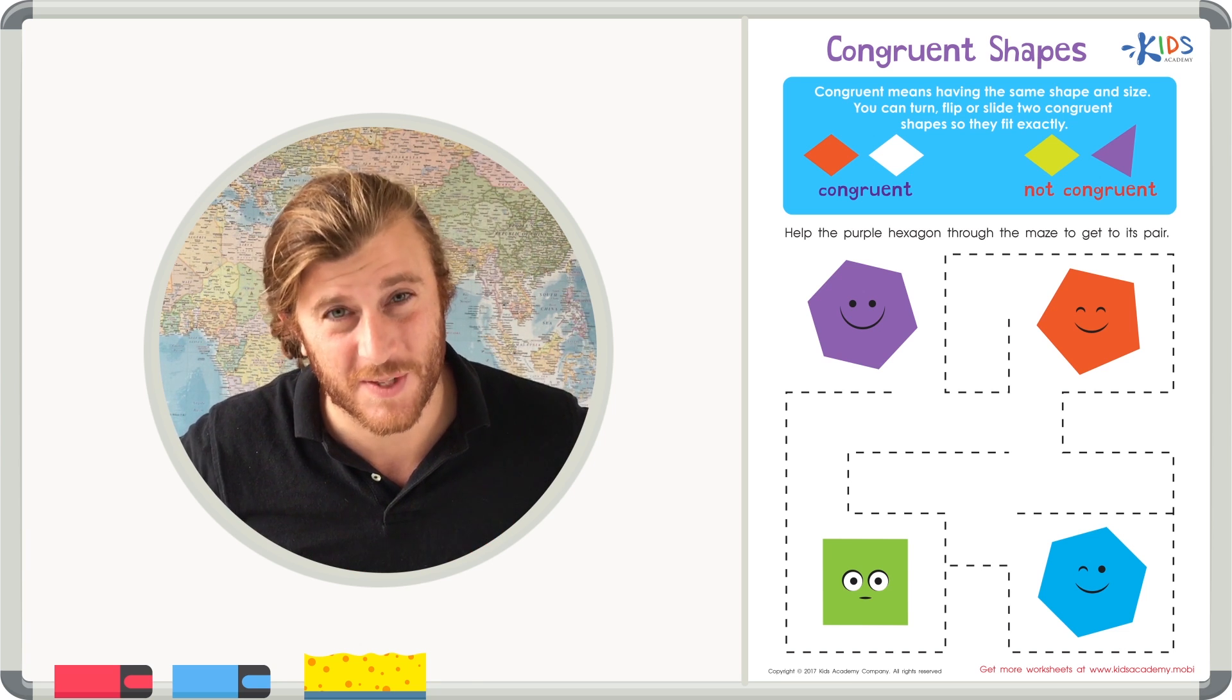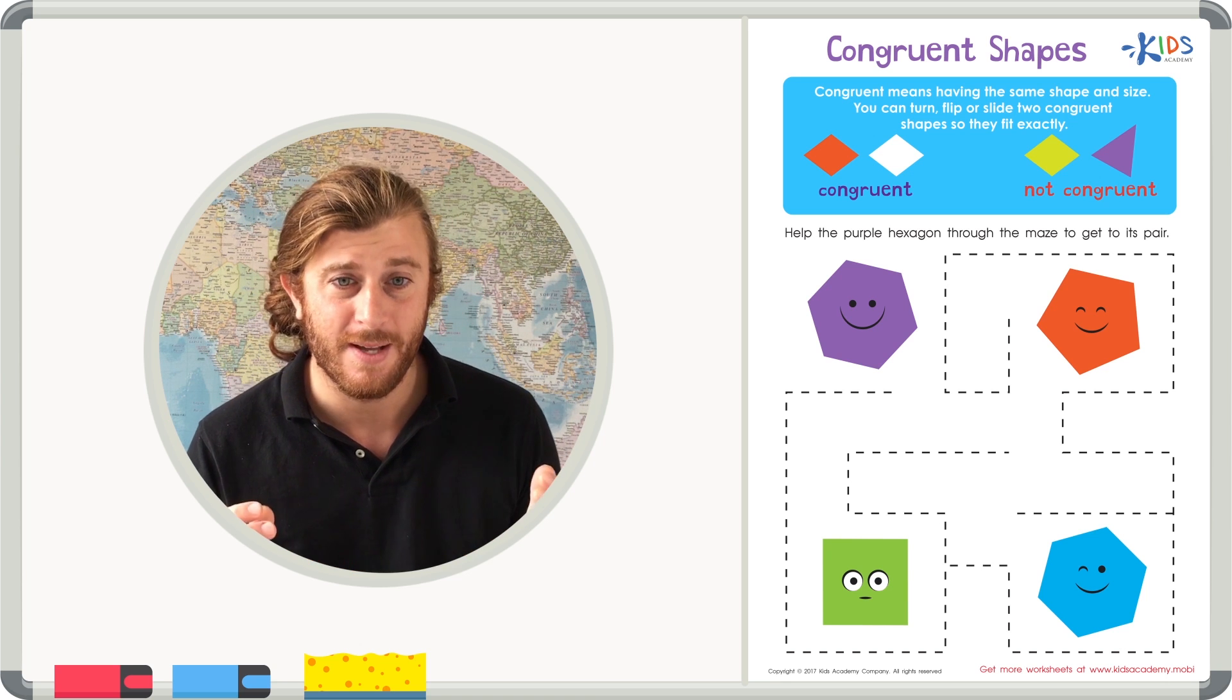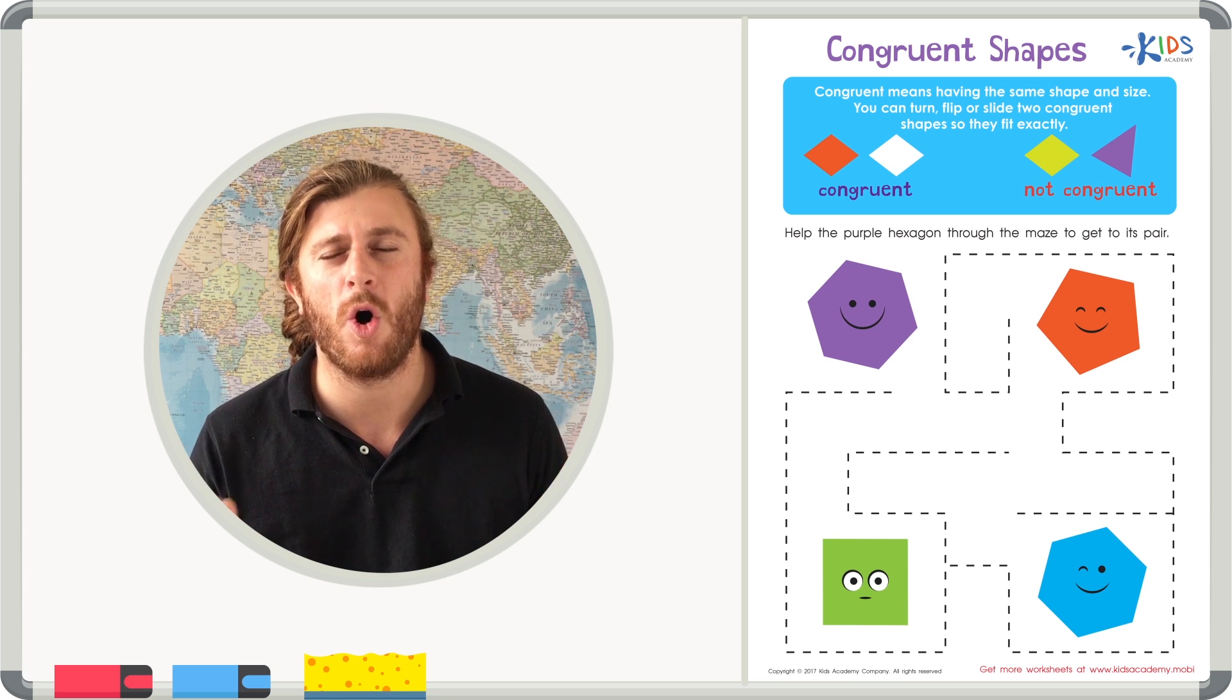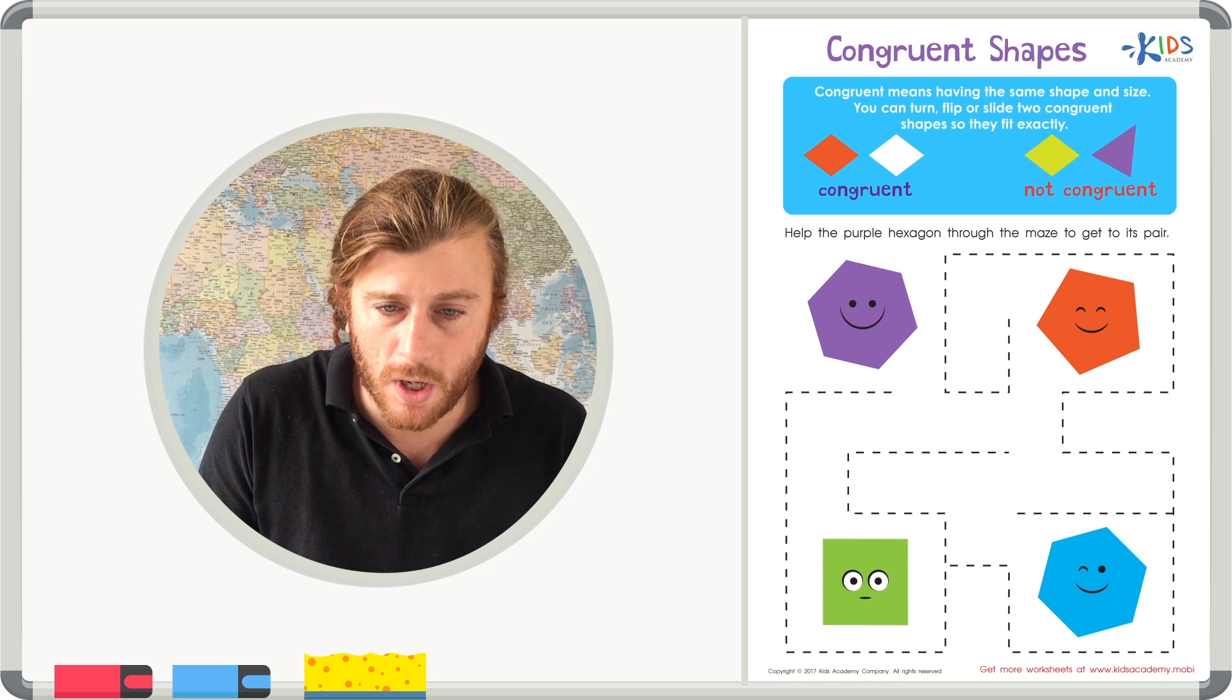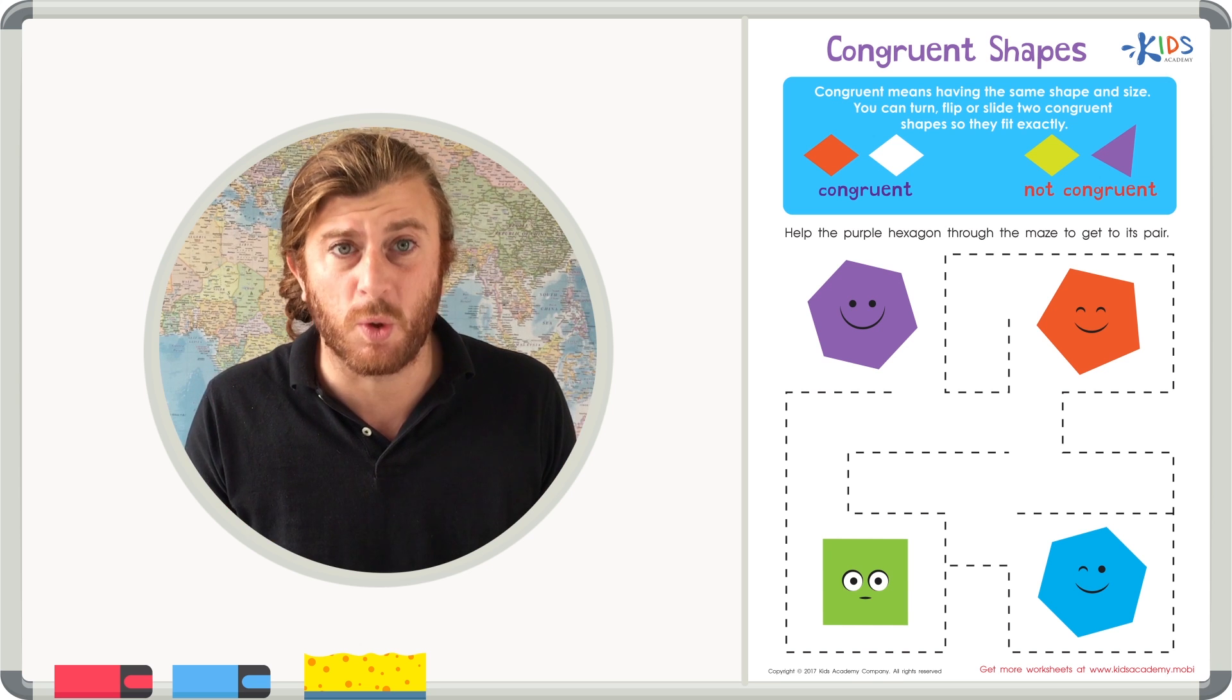It doesn't mean the same color. It means anything related to math, size, shape, number of sides. They all have to be exactly the same. So when I see the word congruent shapes, I really think about equal shapes.